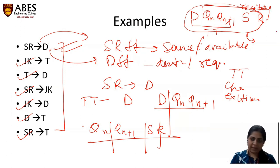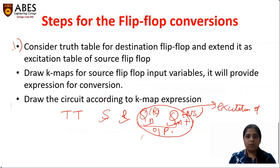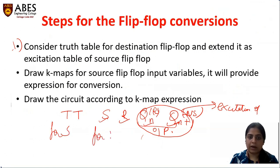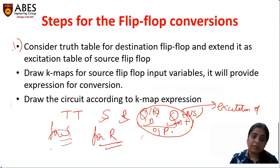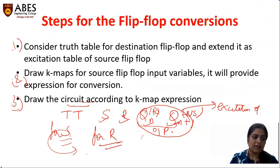Now our next step, step 2, is to draw the K-map for the source flip-flop input variables. Here my source variables are S and R. After making the K-map for S and for R, you have to derive the Boolean expression from the K-map. According to that expression, we come to step 3: we draw the circuit.